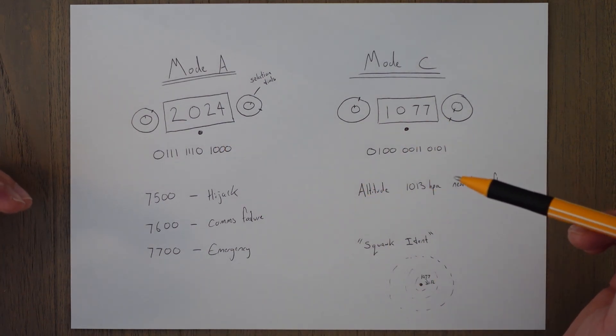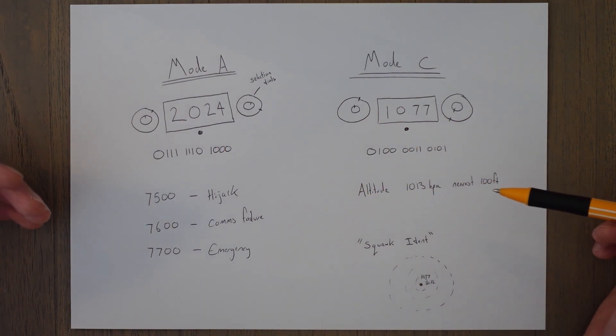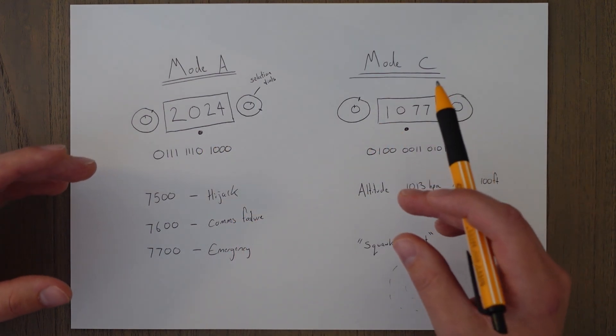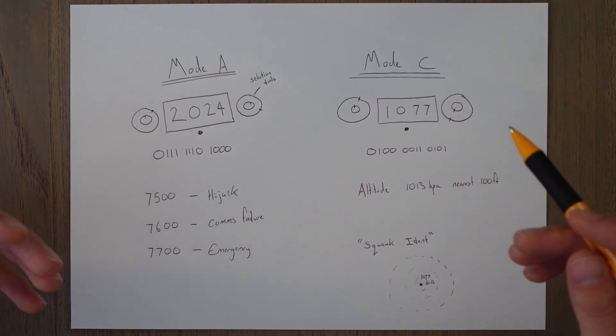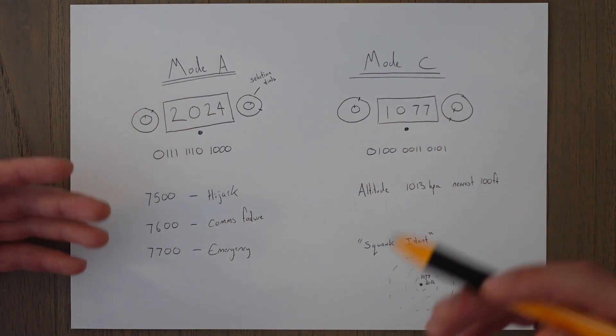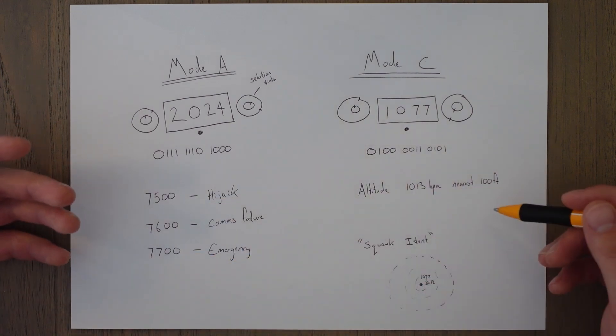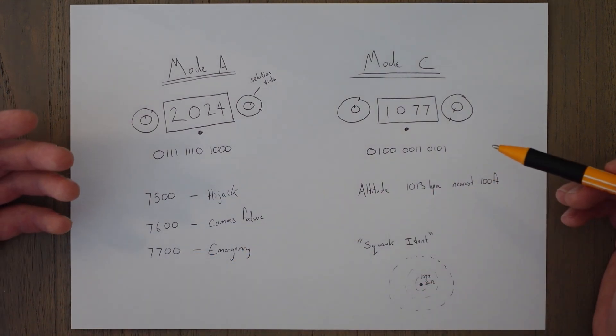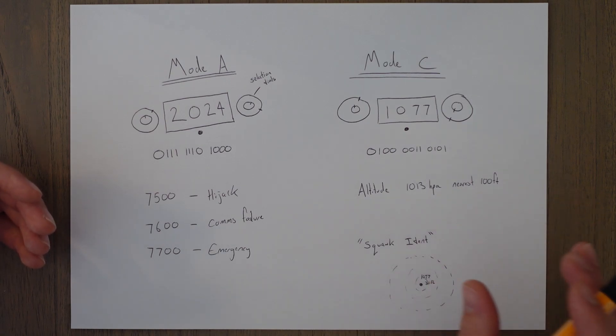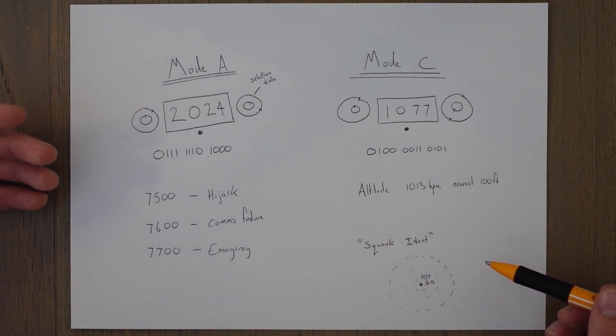Another thing that both Mode A and C can do is something called identing. This is a little button on the transponder that sends out an additional pulse of information which is sent out after the normal reply of those pulses which tells the controller the squawk code and or the altitude. If requested by the controller, the aircraft can ident, which sends out a pulse on the screen of the controller making it easier to find. This can be useful in busy areas of airspace to alert the controller of a new aircraft taking off or joining the airspace in a specific location.